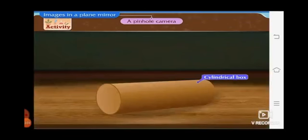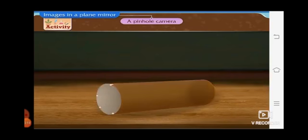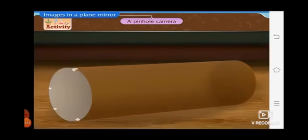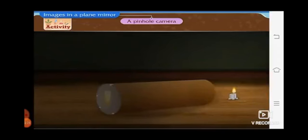We will take an empty cylindrical box, remove its cap on one side and paste a thin white paper in its place. Now, make a small hole at the center of the other cap. Light a candle and hold the box in such a way that the flame of the candle is in front of the hole.